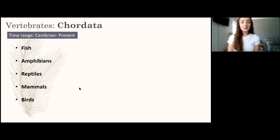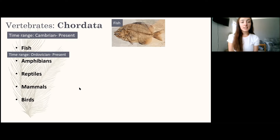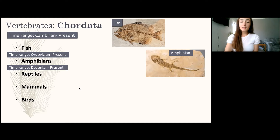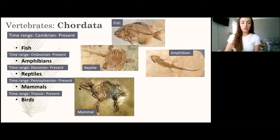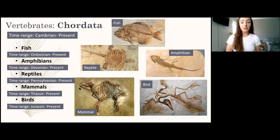Finally, Chordata — our vertebrates. These have been around since the Cambrian, though initially as fish-like organisms not yet classified as true fish. Fish appeared in the Ordovician, amphibians in the Devonian, reptiles in the Pennsylvanian, mammals in the Triassic, and birds in the Jurassic. The geologic period order is: Cambrian, Ordovician, Silurian, Devonian, Mississippian, Pennsylvanian, Permian, Triassic, Jurassic, Cretaceous — spanning the Paleozoic and Mesozoic eras.